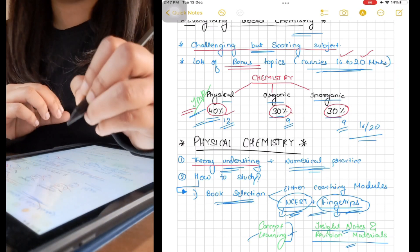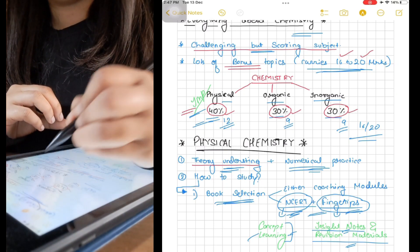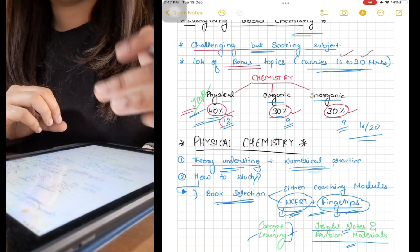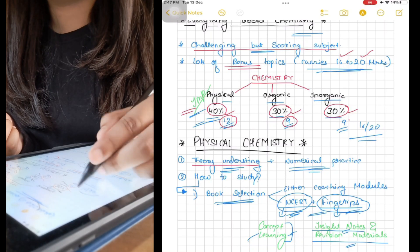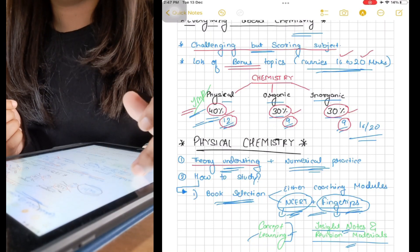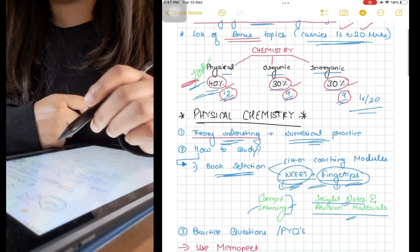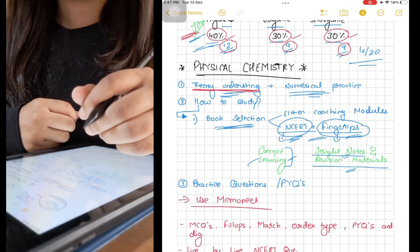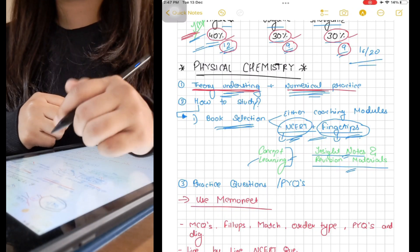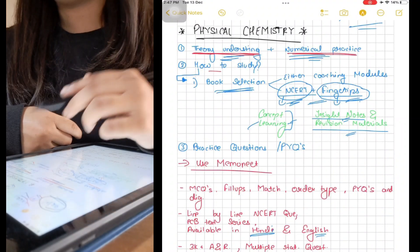There are 12 chapters in physical chemistry, 9 chapters in organic chemistry, and 9 chapters in inorganic. We can say physical chemistry carries 40% and organic and inorganic carry 30% each. Physical chemistry is more important. Physical chemistry needs theory understanding plus numerical practice.